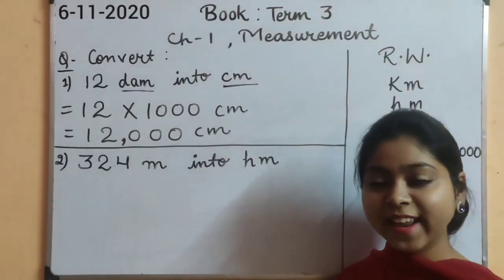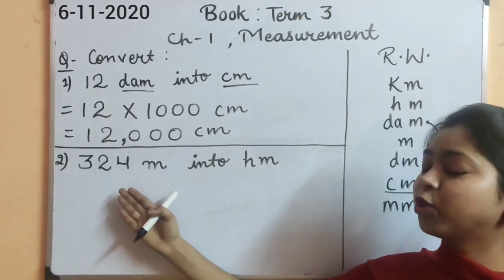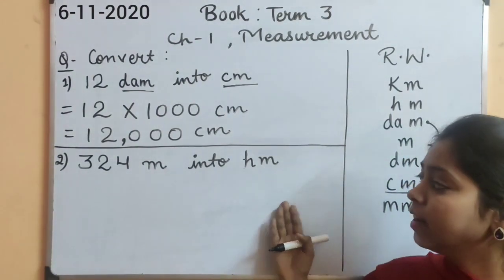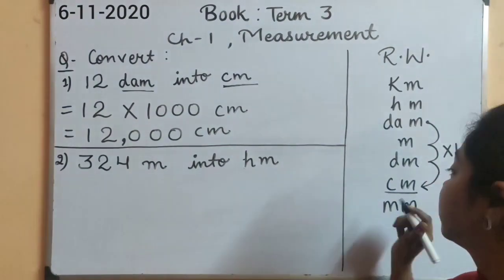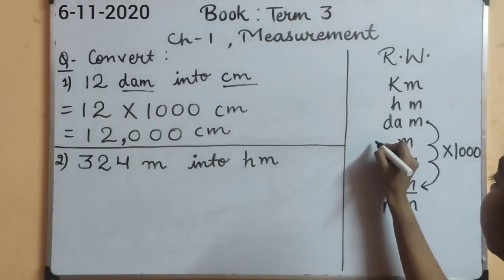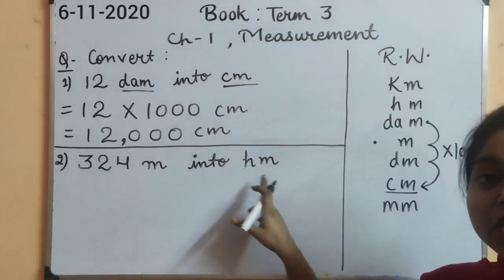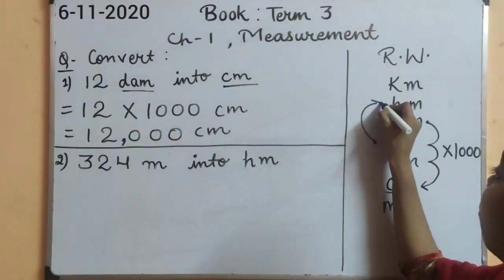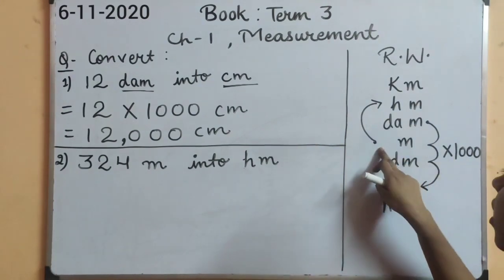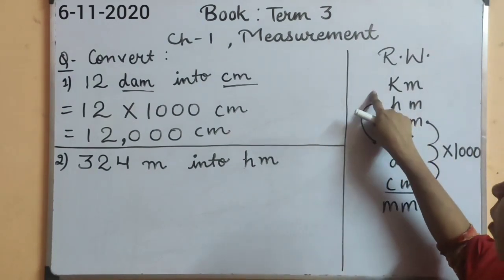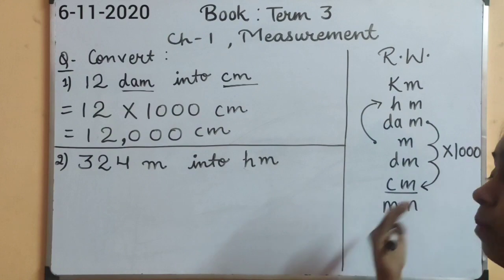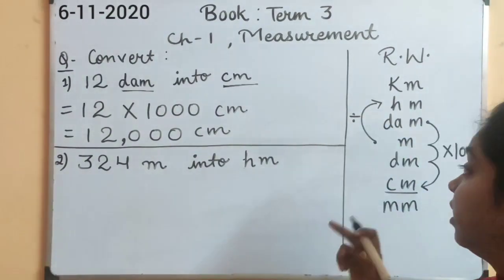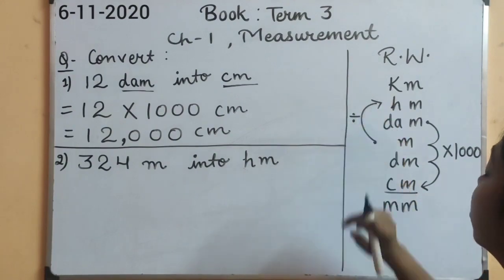Now here is our next question. Three hundred twenty-four meter into hectometer. So let's first of all find where is the meter in our given table. The meter is here. And we need to go to the unit hectometer. First of all it's moving from smaller to big, down to up. So it means we will divide it. And it has moved one, two places.